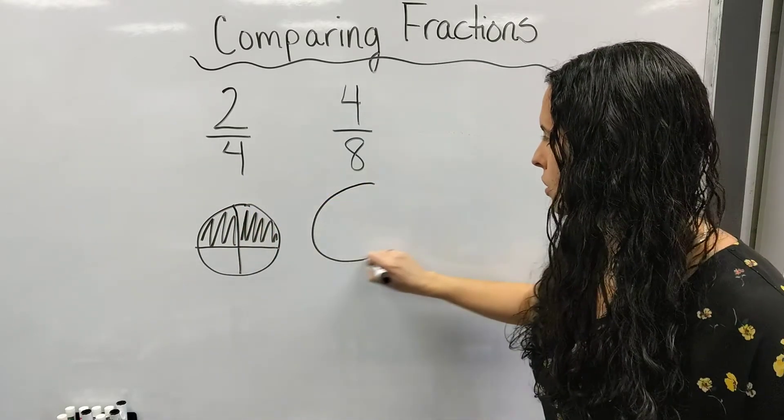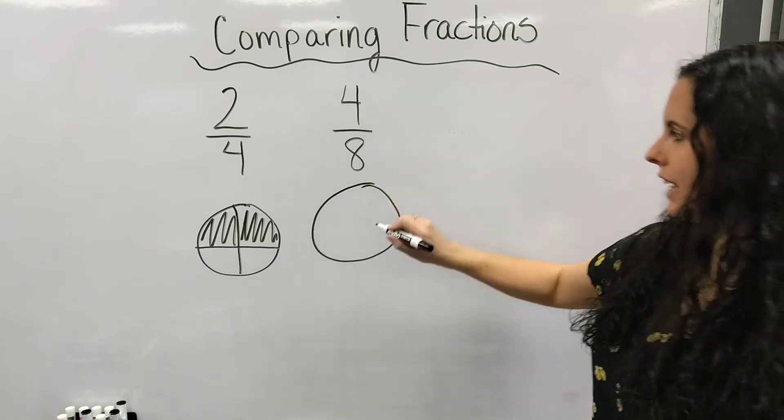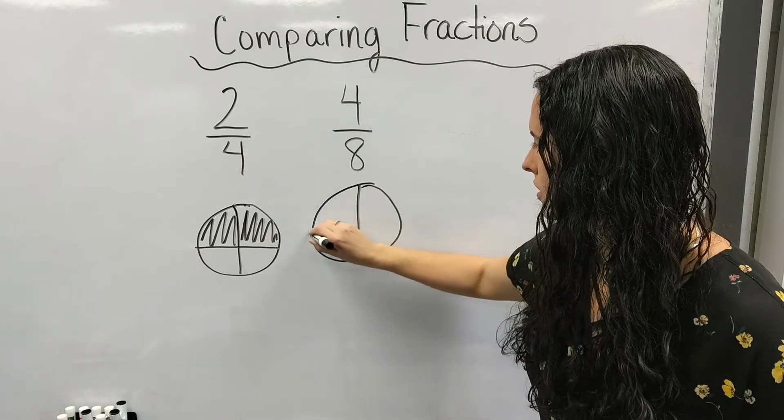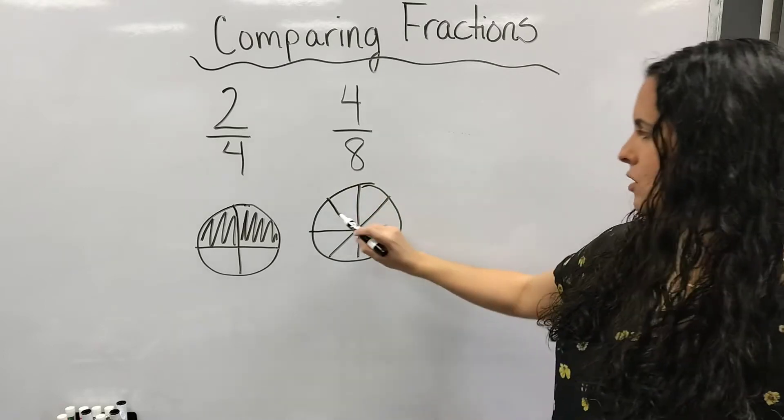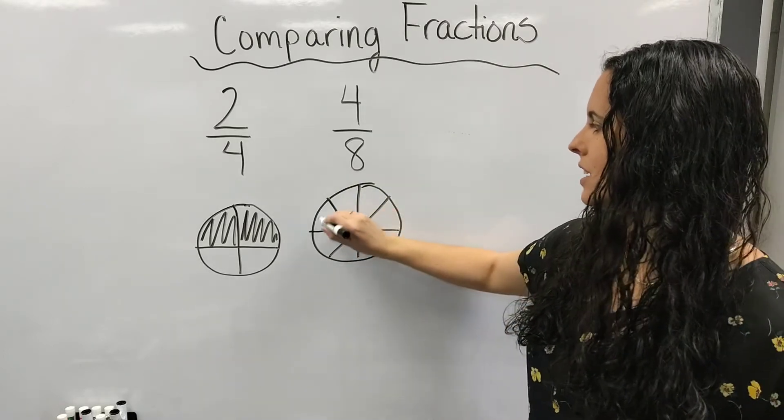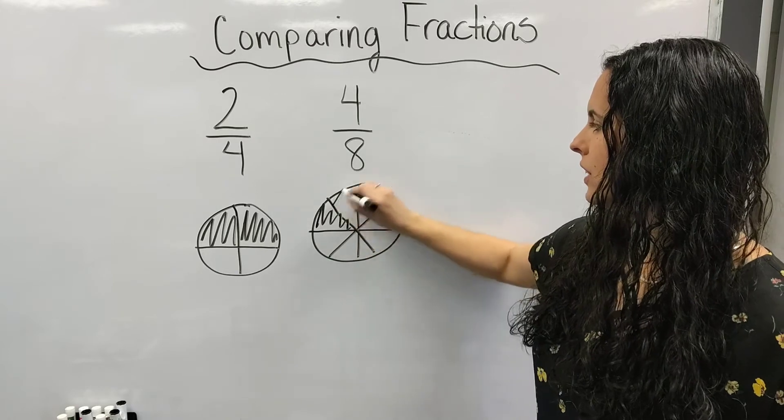Now I'm going to represent my four-eighths. One, two, three, four lines. It gives me one, two, three, four, five, six, seven, eight pieces, and I'm going to shade in four of them.